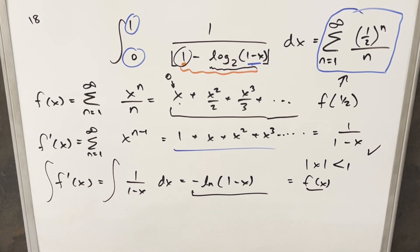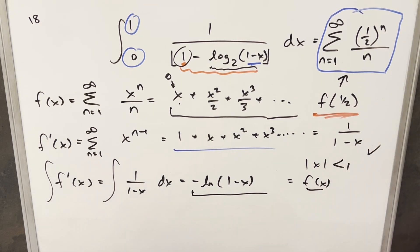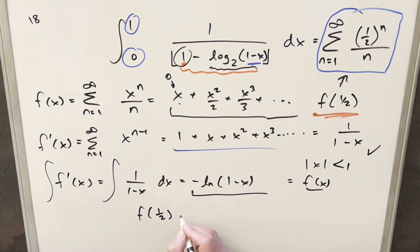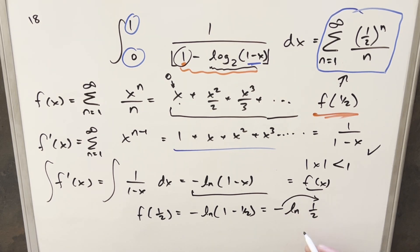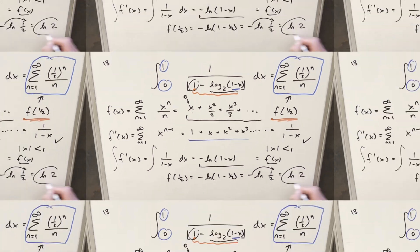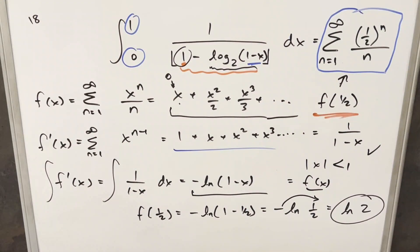Now we just need to find f(1/2). Plugging in: f(1/2) = -ln(1 - 1/2) = -ln(1/2). Taking the minus into the exponent gives us the reciprocal, so our final answer is the natural log of 2.